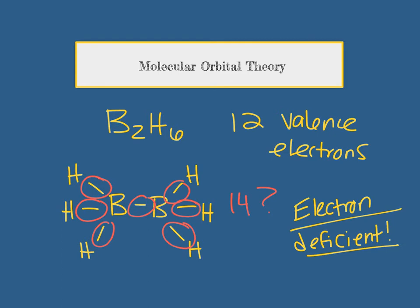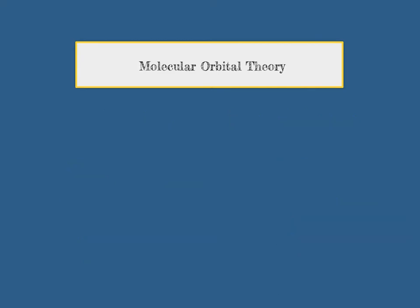So we needed to have a new theory. We needed another way of describing what goes on in molecules. In molecular orbital theory, electrons exist in places called molecular orbitals. These are very similar to our atomic orbitals from quantum theory.